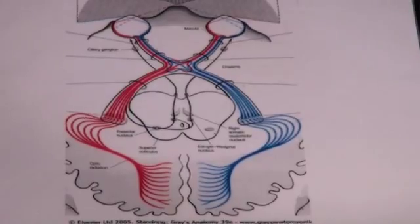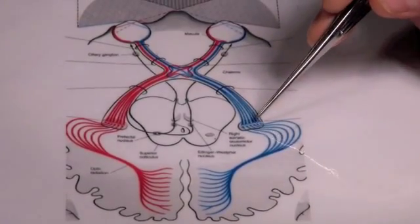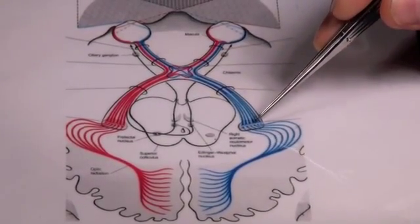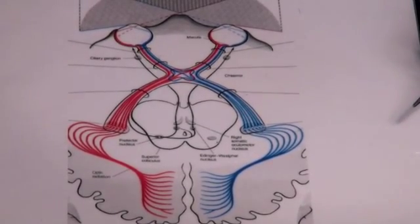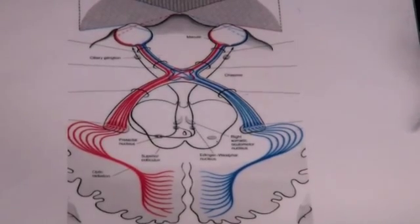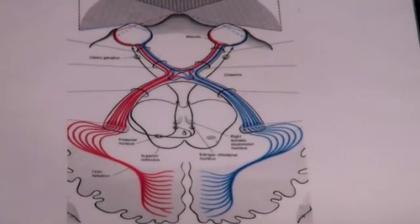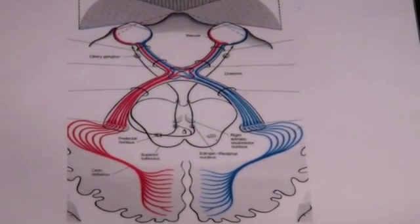And Paul, this geniculate body is in the thalamus, isn't it? So it's obeying this little rule I have that all conscious sensation has to synapse in the thalamus. With one exception that's true. What's the exception? The exception is olfactory. So that lateral geniculate body is in the thalamus. Yes.